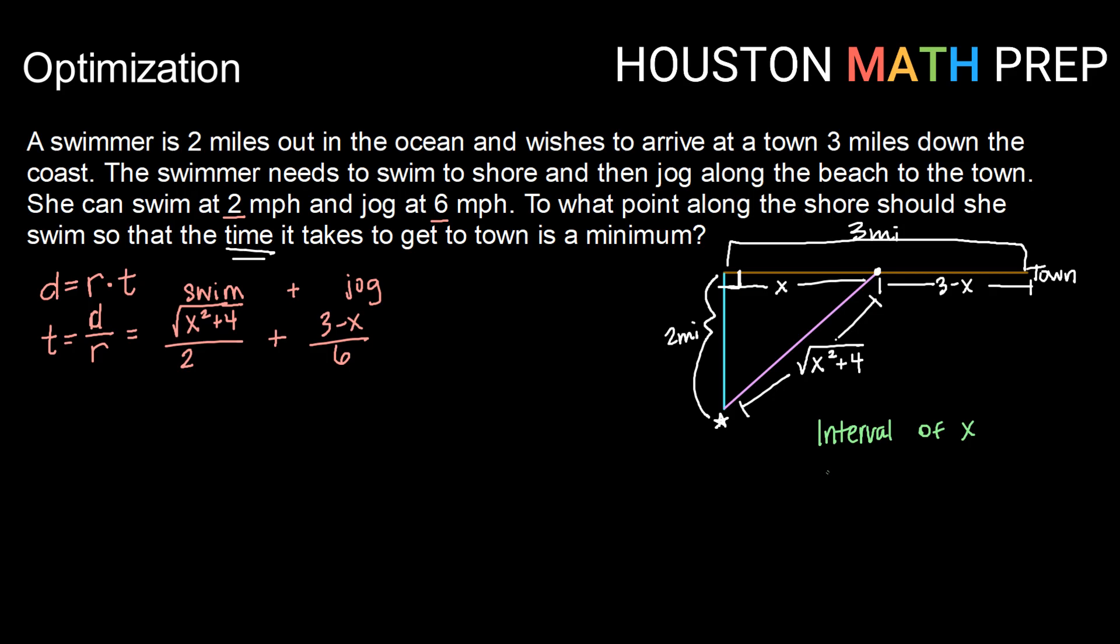What's the smallest x can be? Well, technically, she could swim straight up and jog the rest of the whole three miles, in which case this distance over would be zero. So that's an option. She could land zero miles over and just swim straight up. The furthest over that she could land would be if she swam all the way to town and she didn't jog at all. In that case, x would be three, the full three miles over. So our reasonable interval for x is zero to three.